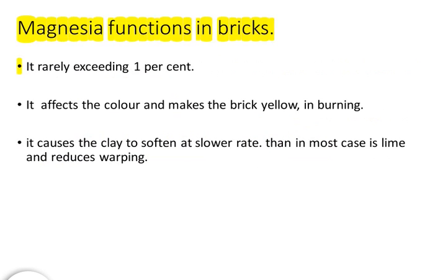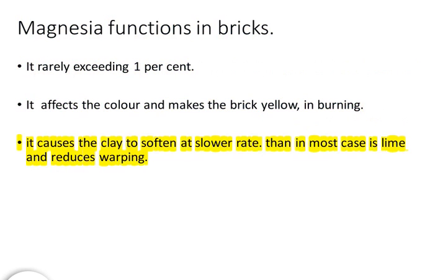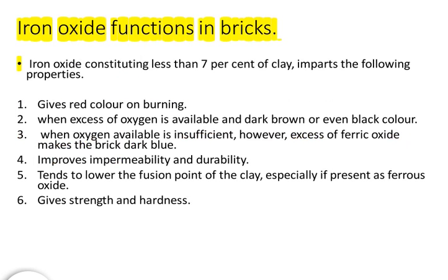Magnesia functions in bricks. It rarely exceeds 1%. It affects the color and makes the brick yellow in burning. It causes the clay to soften at a slower rate than in most cases lime, and reduces warping.